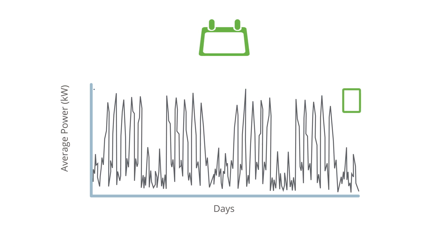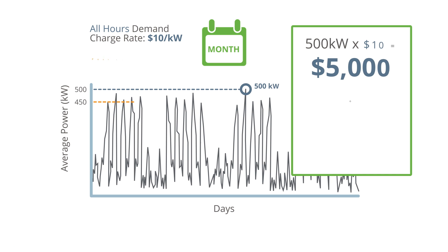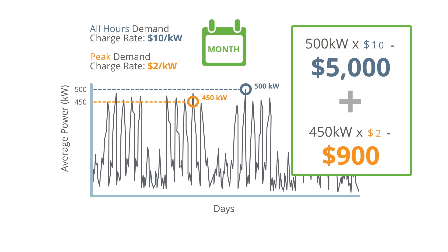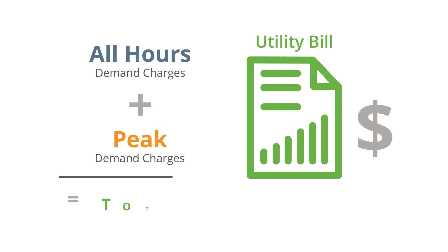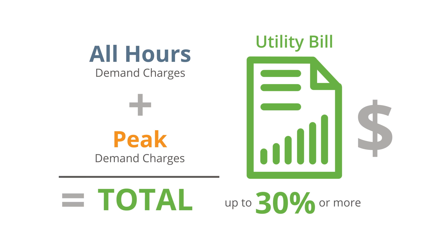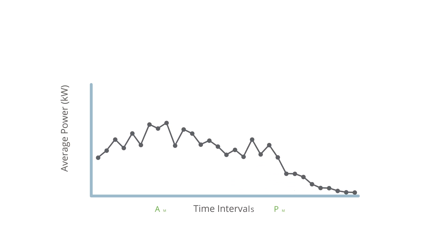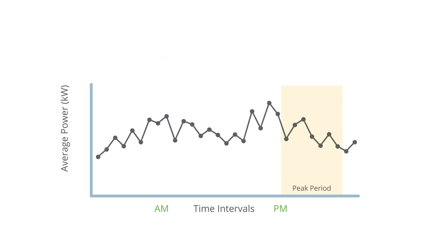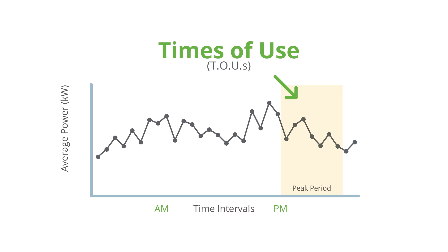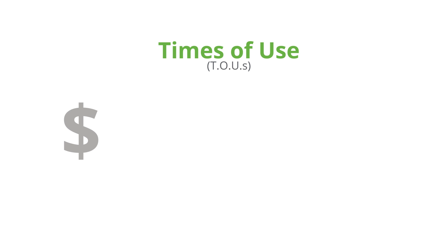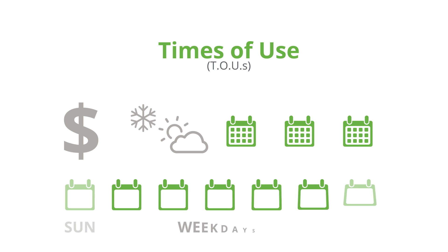Revisiting the billing cycle, on top of the all-hours demand charges, additional peak demand charges would be added. This means the total demand charges equal all-hours demand charges plus peak demand charges, which can add up to a significant portion of monthly energy costs. Now let's look at times of use. The peak period mentioned earlier is what's known as a utility time of use, or TOU. TOUs are periods defined by the utility with different rates and pricing, and in addition to affecting demand charges, they also affect energy prices. TOUs vary by season and even by type of day, like weekday or weekend.